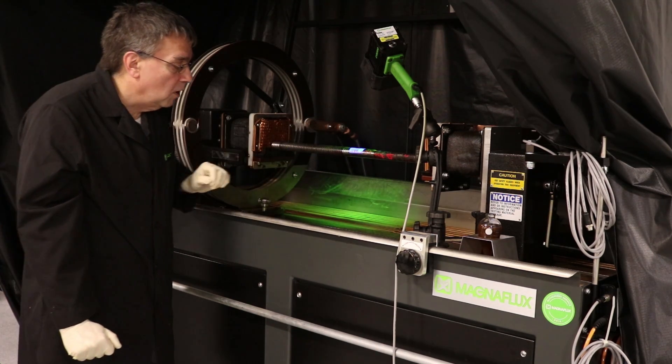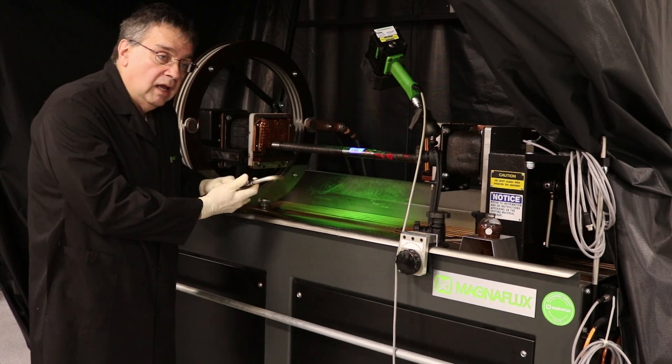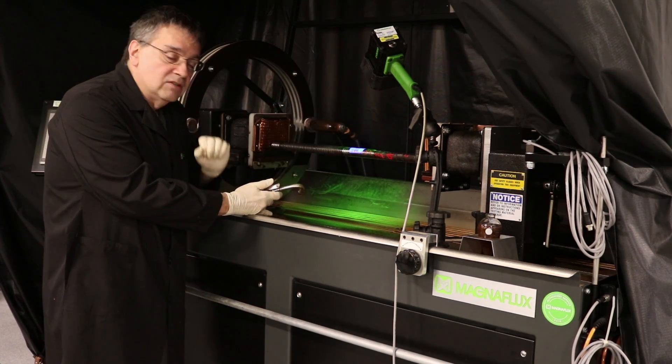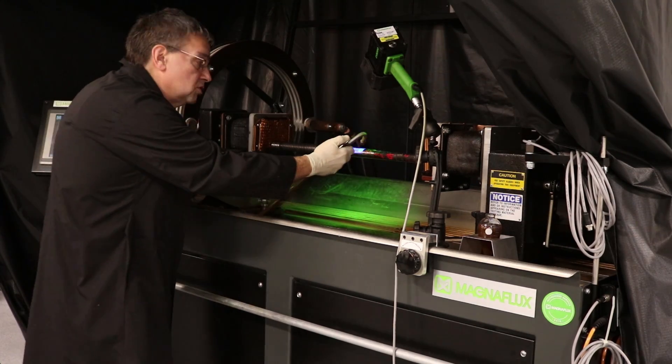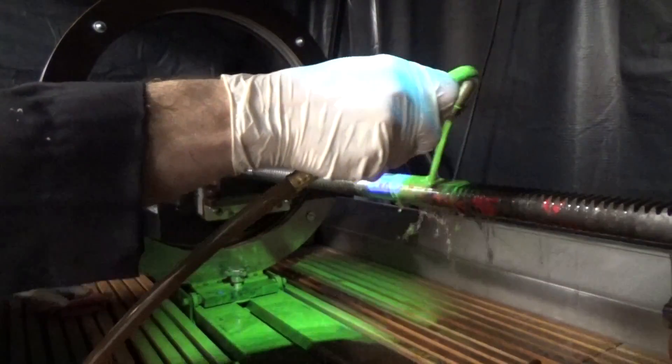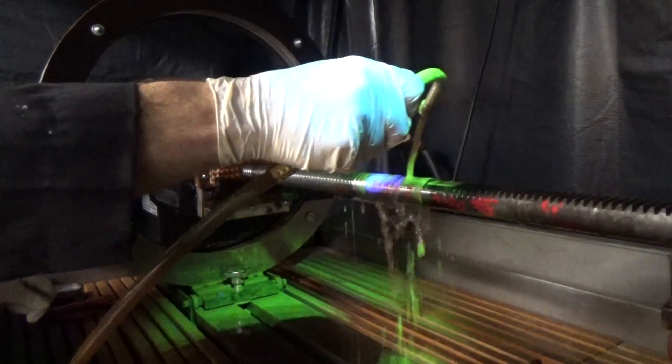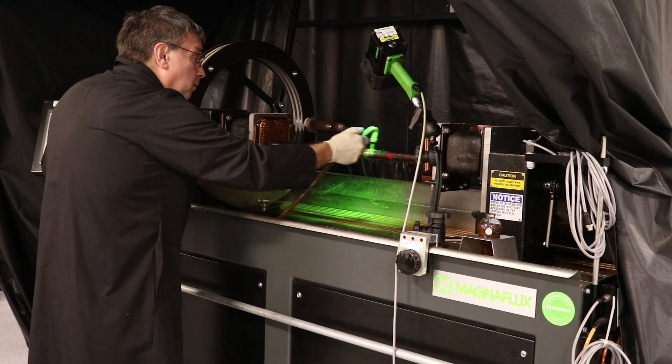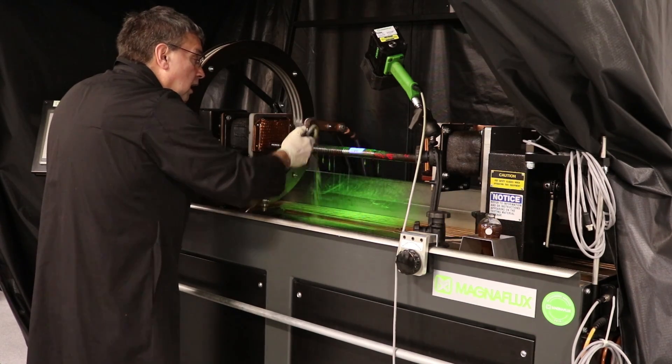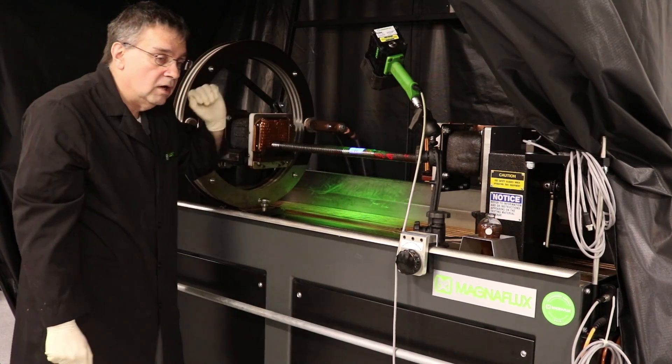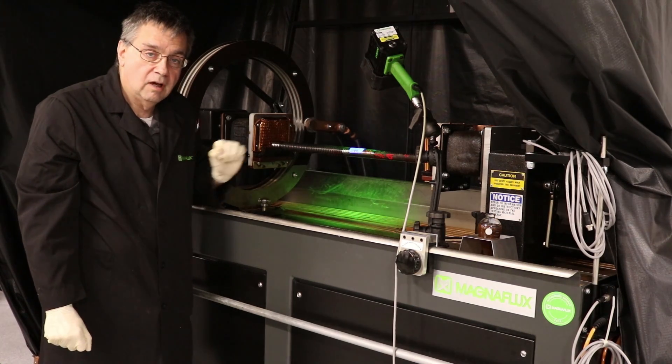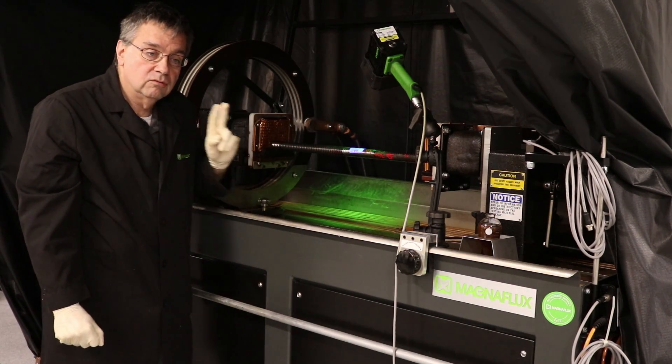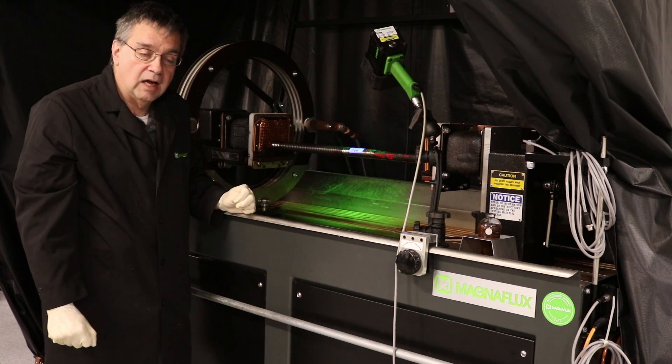So now that we have the part clamped in, we will wave the part, and then we'll apply the magnetization current right as I stop the bath. I wave the part sufficiently. Anytime the particles are still moving freely on the part, I apply the magnetic current. Now you heard two pulses of mag current on this machine. The ASTM standard says we're required to do two mag shots on each part.